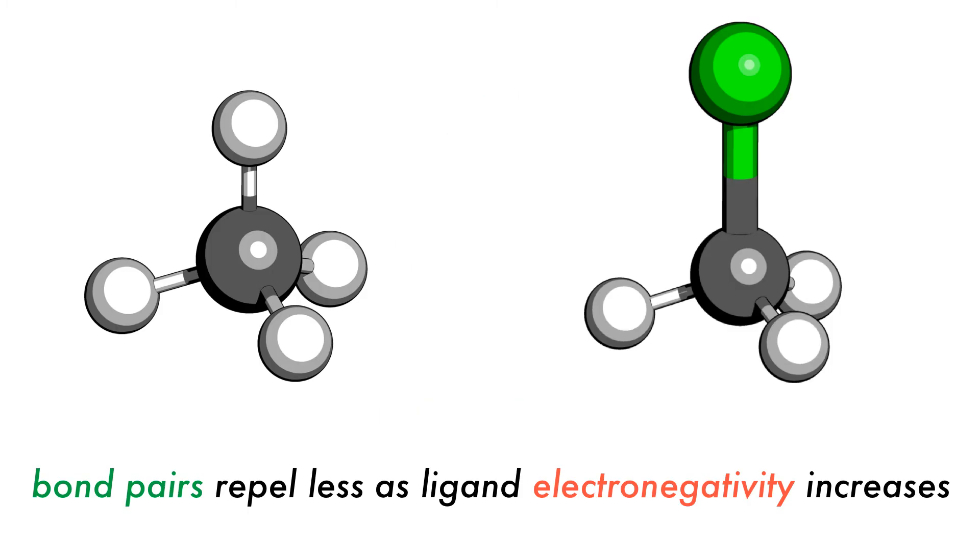The second empirical rule that we encountered earlier stated that bond pairs repel less as the ligand's electronegativity increases. We can see this experimentally when we compare methane and chloroform as the angle between the carbon hydrogen bonds increases, also increasing the space between the hydrogen atoms.